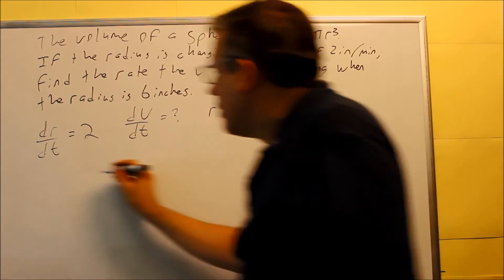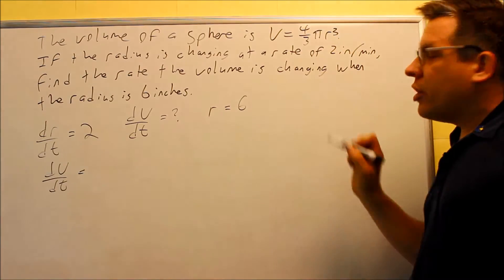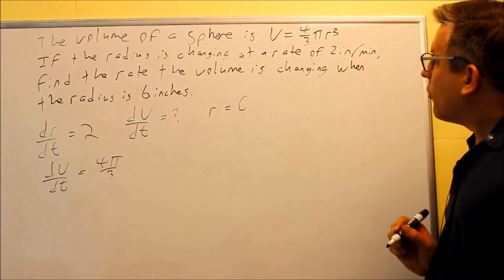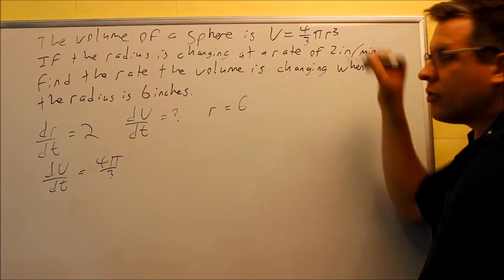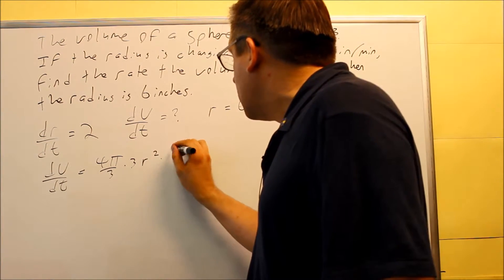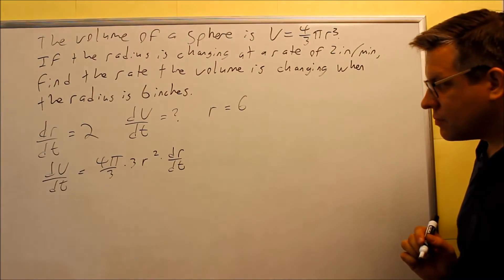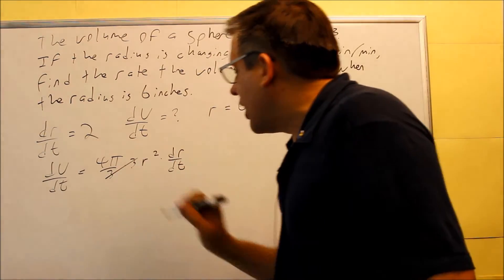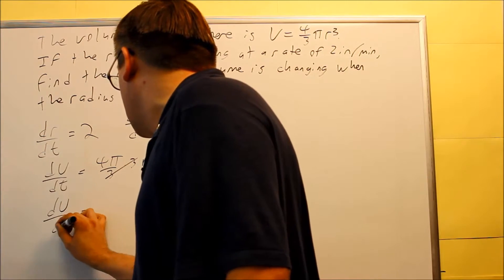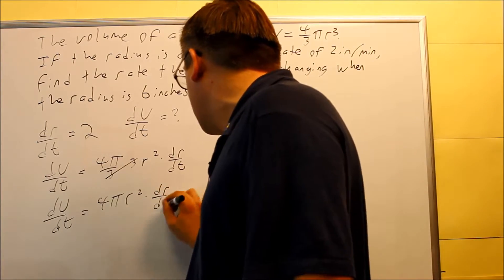Now let's take the derivative of both sides with respect to time. The left-hand side gives dV/dt. On the right we have (4/3)π, which is a constant, so I leave that as 4π/3. Then I do the derivative of r cubed using the chain rule: the 3 comes down, giving r squared, and don't forget to multiply by the derivative of the inside, dr/dt. The 3's cancel, so dV/dt = 4πr²(dr/dt).